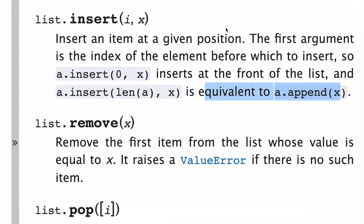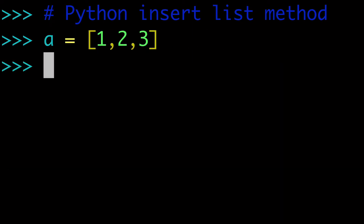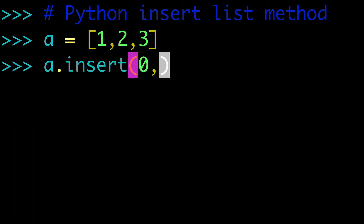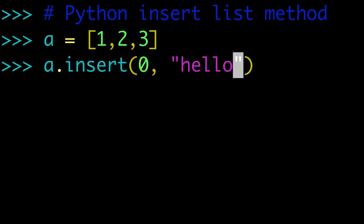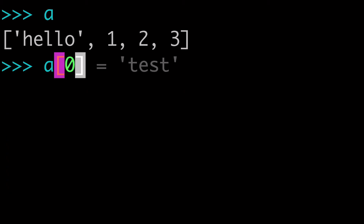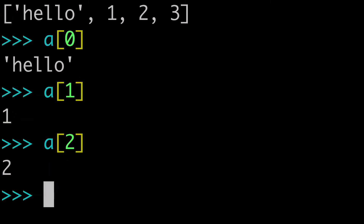Now let's move to the terminal and start working with the insert list method. First, we'll create a simple list: a = [1, 2, 3]. To insert a value at the start, we use a.insert(0, 'hello'). When we look at a, we now have 'hello' at position 0. We can confirm that using slice notation — a[0] is 'hello', a[1] is 1, a[2] is 2, and so on.